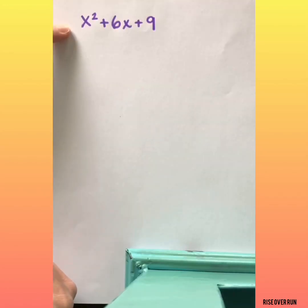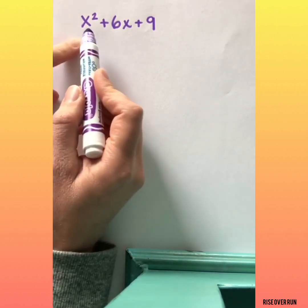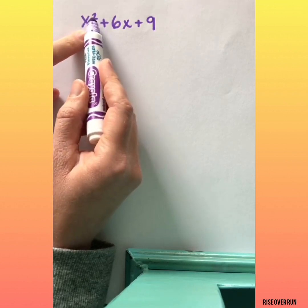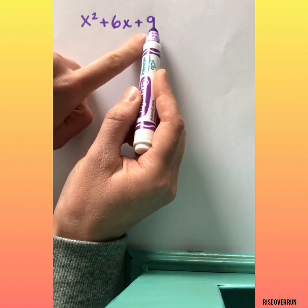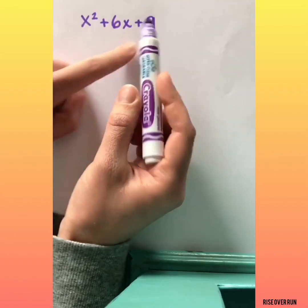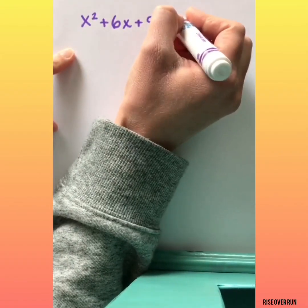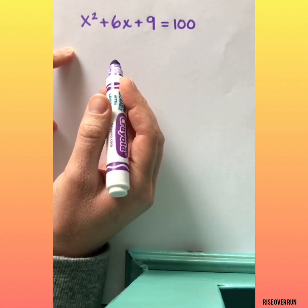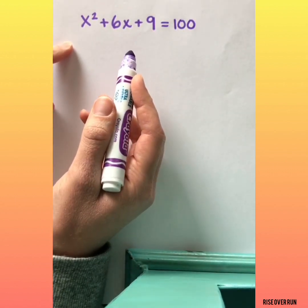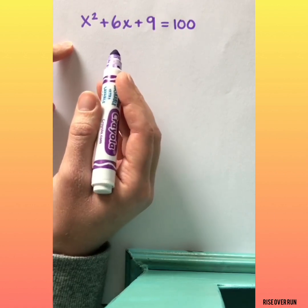Today, we're going to talk about completing the square and the quadratic formula. Let's look at this quadratic here. This is in standard form, meaning it goes from the greatest exponent to just the plain x and then the constant at the end. If we were to set this equation equal to 100, could we solve it? Well, sure. There are a few ways we could do it, and first we're going to use completing the square.